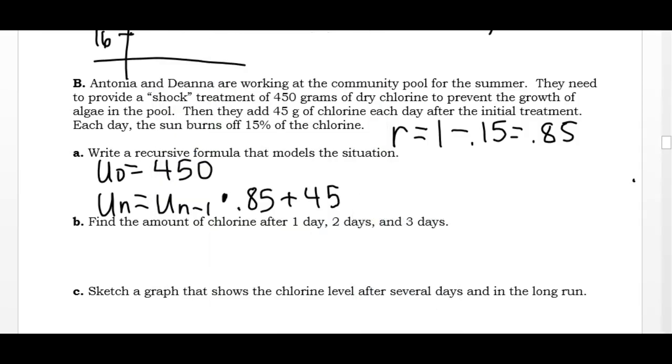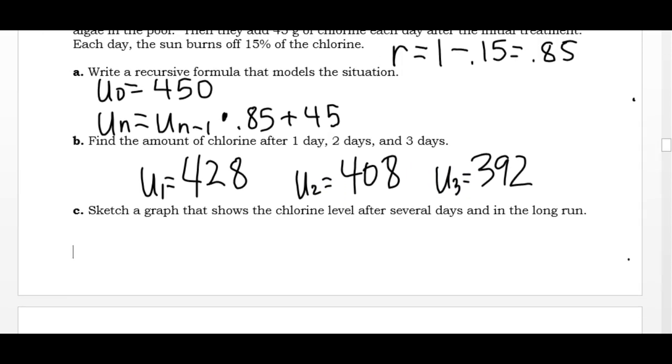So that is U1, U2, and U3. Sketch a graph and find the long run. So I can tell that it's decreasing. That first shock treatment they provide kills off all the algae, but it's not really safe to swim in yet. So it's going to start decreasing, and it's going to eventually level off at a level that's going to keep stuff from growing in the pool but be safe to swim in. So I want to find that long run value.